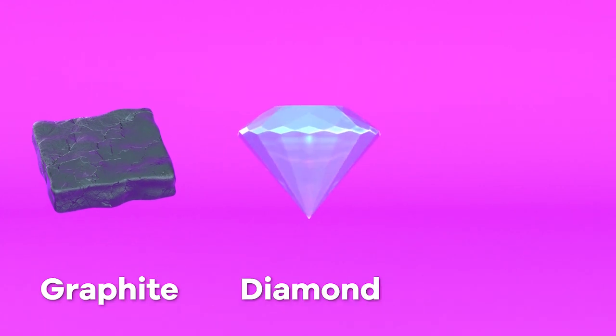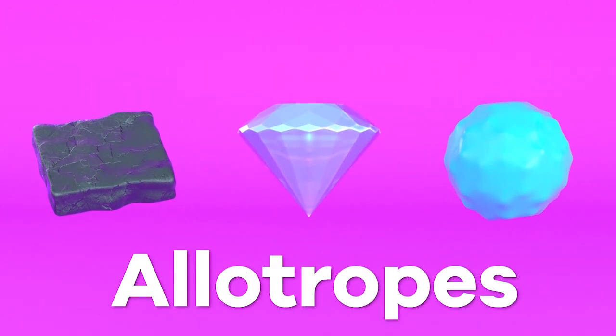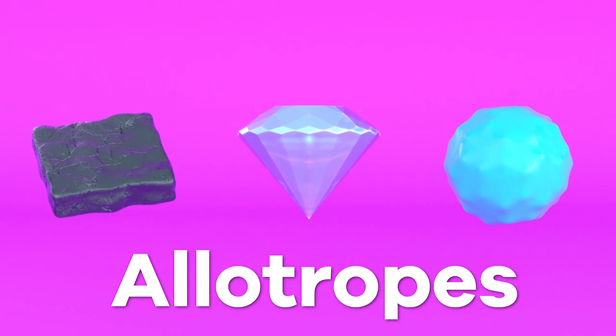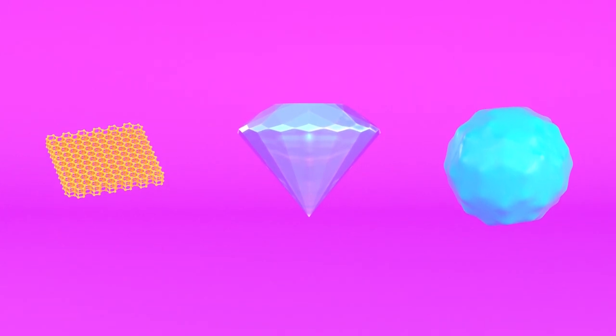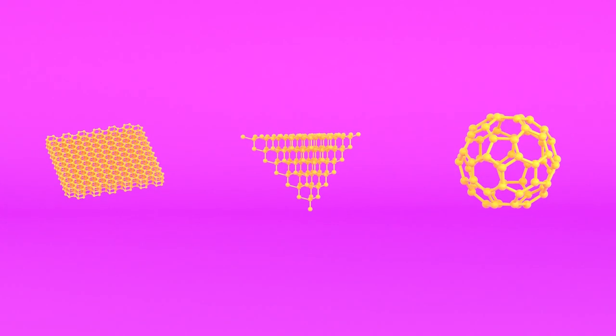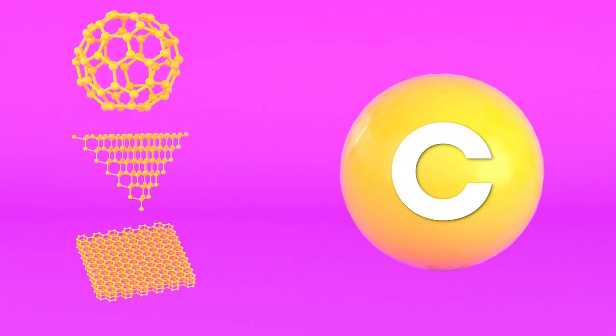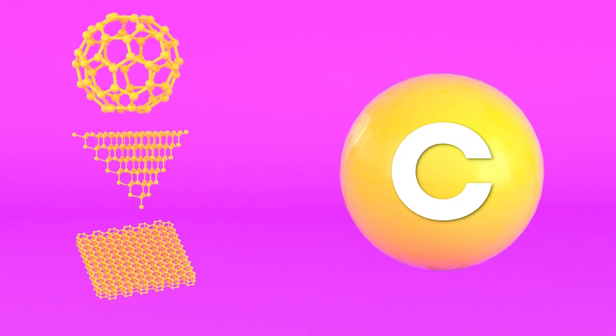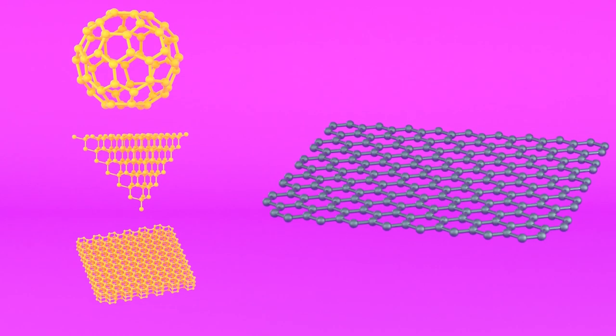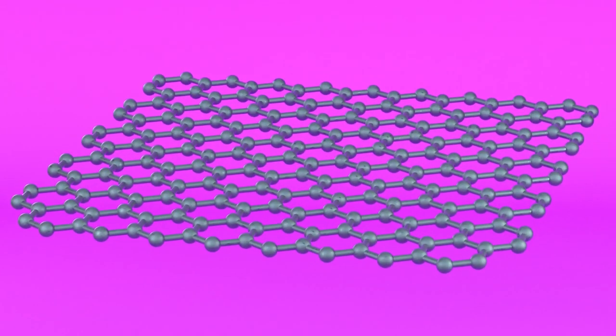To understand this, let's consider graphite, diamonds and buckyballs which are all known as allotropes of carbon. An allotrope is built up from the same atom but organized in different structures which gives the material different properties. Graphene is a single layer of carbon atoms that are arranged in a honeycomb lattice. Only when a graphene layer is separated from graphite does it show its magical properties.